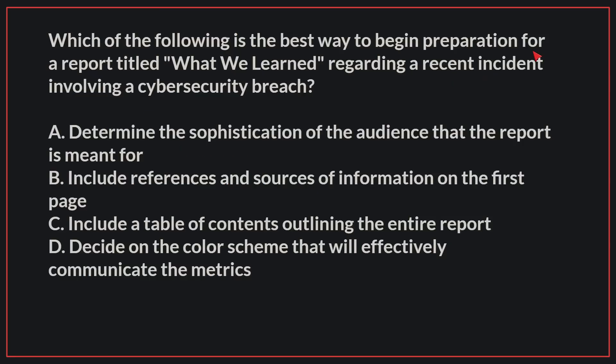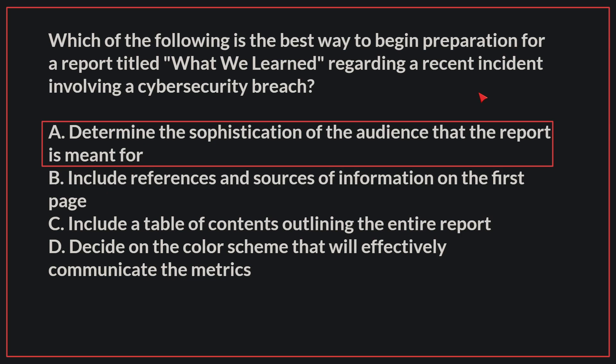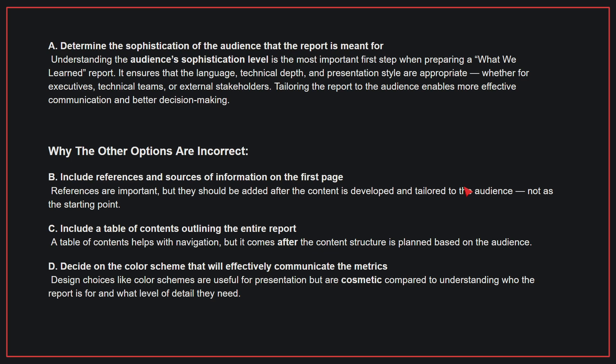Therefore, the correct answer is B. Which of the following is the best way to begin preparation for a report titled 'What We Learned' regarding a recent incident involving a cybersecurity breach? The correct answer is A. Determine the sophistication of the audience that the report is meant for. Understanding the audience sophistication level is the most important first step when preparing a 'What We Learned' report. It ensures that the language, technical depth, and presentation style are appropriate, whether for executives, technical teams, or external stakeholders.